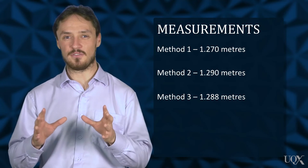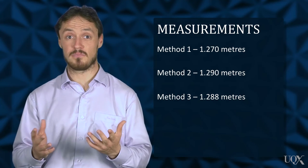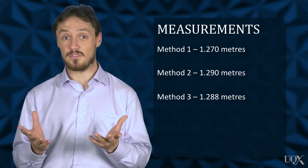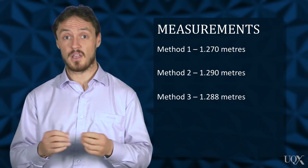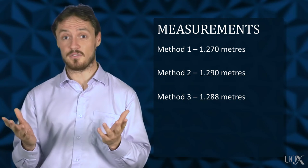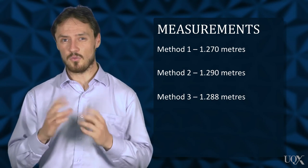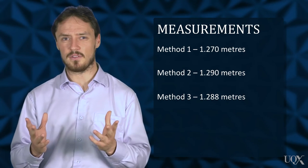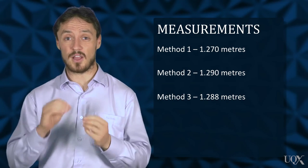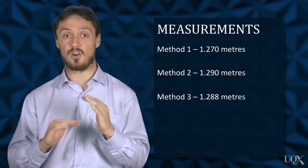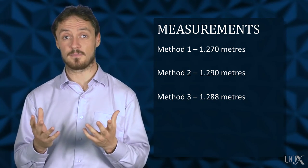Possible reasons for these differences may include: the string does not follow a straight path around the wheel; the thickness of the string; and the rolling tyre method allows the weight of the wheel to slightly compress the tyre, thus reducing the measured circumference.